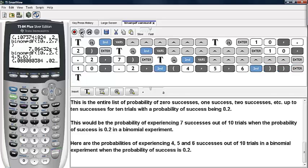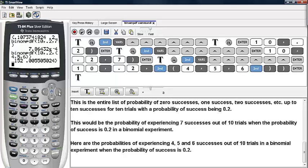Here we see the probabilities of experiencing 4 successes out of 10 trials with a probability of about 0.2, that's about 0.088. If I scroll over, I can see the probability of getting 5 successes out of 10 with a probability of success being 0.2. And if I continue to scroll, I can see the probability of getting 6 successes out of 10 trials when the probability of success is 0.2. This is how you can use the binompdf command on the calculator.